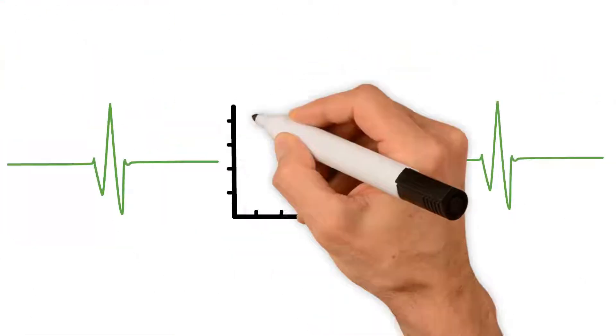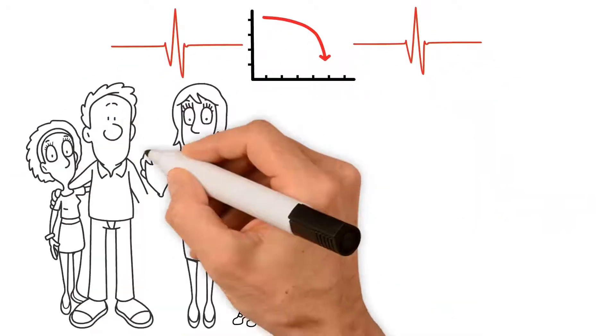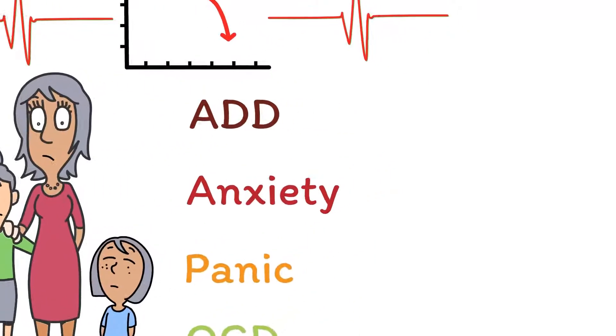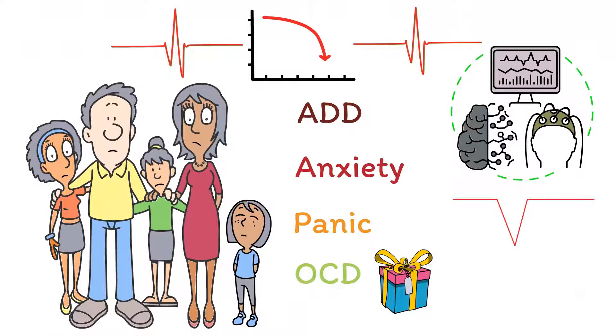Let's say we have a brainwave that we want to bring down because it's too strong, which is often the case in kids and adults with ADD, anxiety, panic, OCD, and similar disorders. In this case, neurofeedback will provide a reward every time this brainwave dips in its natural movement patterns up and down.